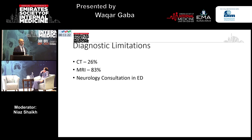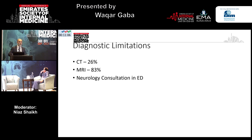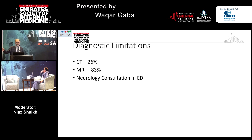We do have diagnostic limitations. Often I hear 'let's just do an MRI,' but is MRI the answer? CT is diagnostic only in 26% of these patients, and MRI is diagnostic in 83%. Even neurology consultation — whether in the hyperacute stroke unit in London or EMS — does not get you to 100%. You will miss stroke mimics and stroke chameleons as well.